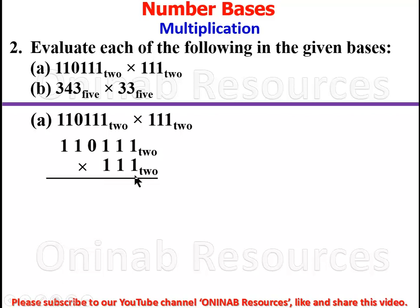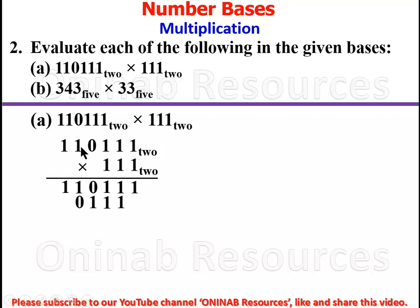Multiplying with the first 1 as multiplier: 1 times 1, 1, 1, 0, 1, 1 gives 110111. Under the second digit we place 110111 shifted one position. Under the third digit we place 110111 shifted two positions. So we have three rows: 110111, then 0110111, then 00110111.